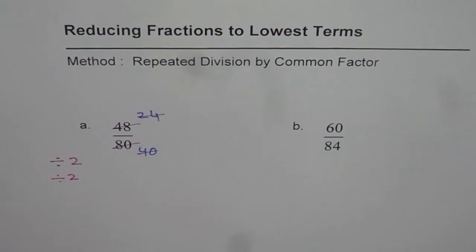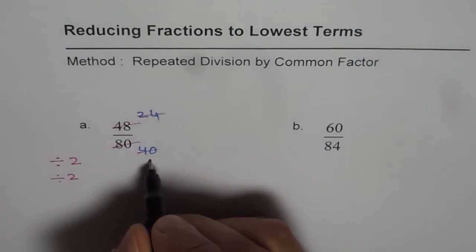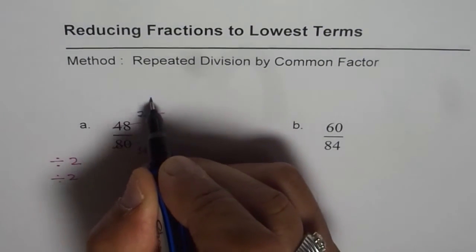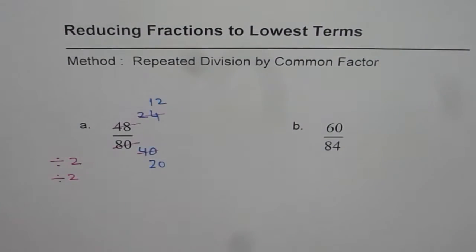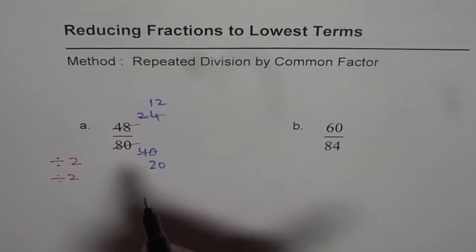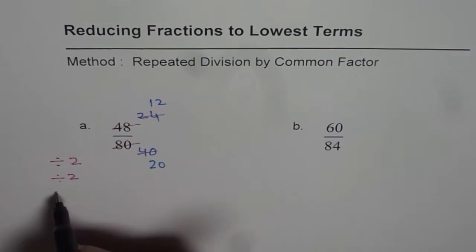So when I do it division by 2 I get 20 here and 12 there. Now further both are 12 and 20. We know we can now divide by 4.